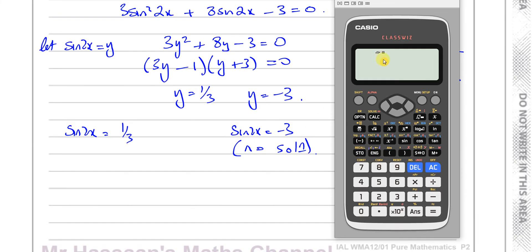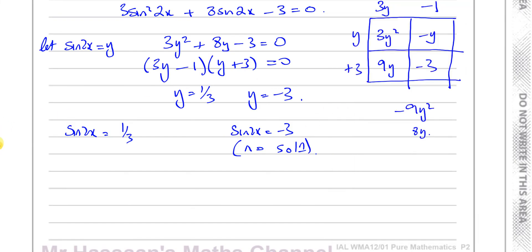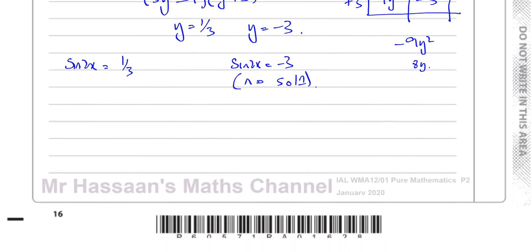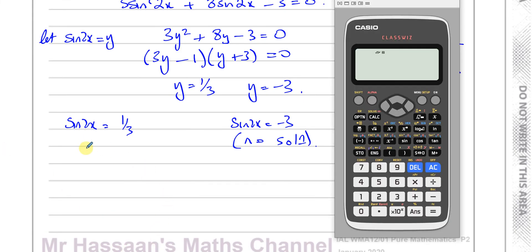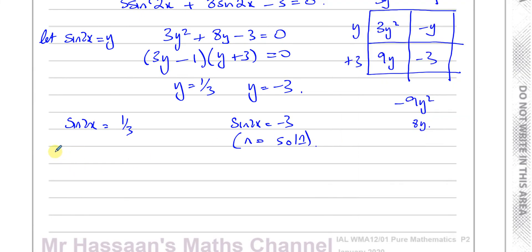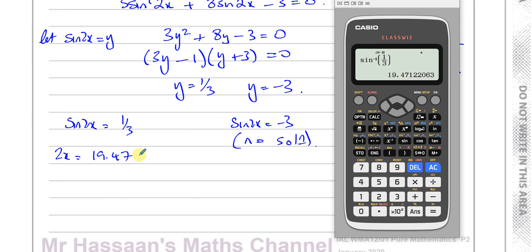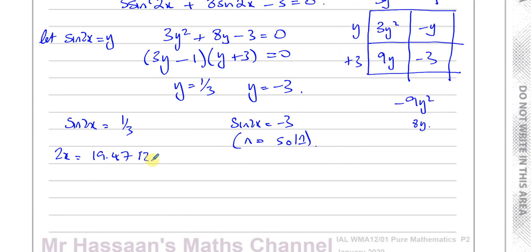Now sine 2x equals 1 third. We are in degree mode. The question did say write it in degrees to two decimal places. So let's put this in our calculator. Inverse sine of 1 third. So we have 2x equals 19.4712. That's one angle.